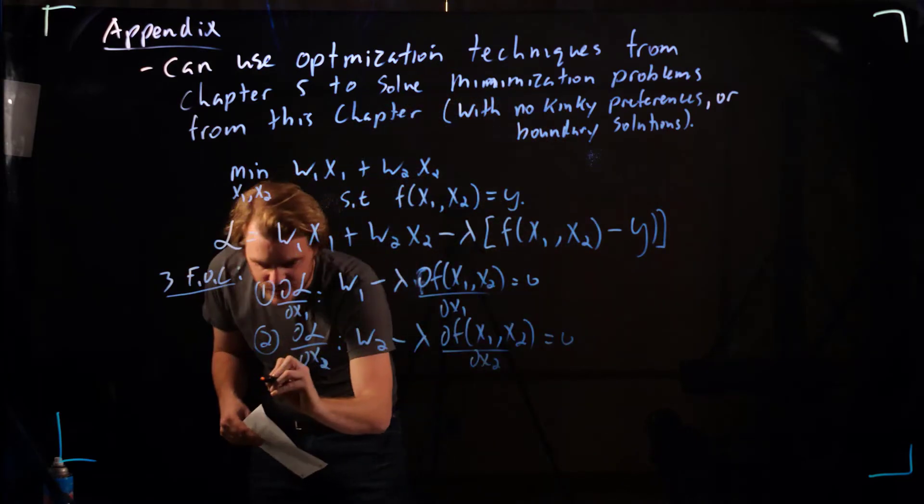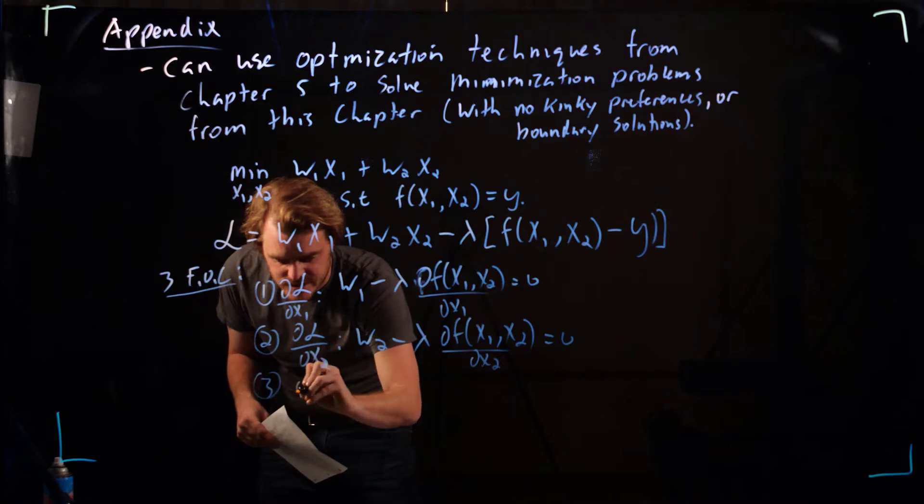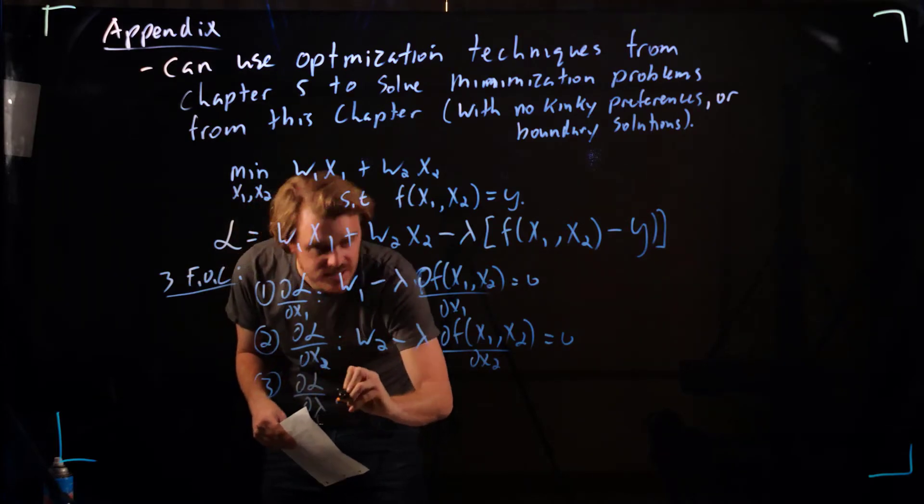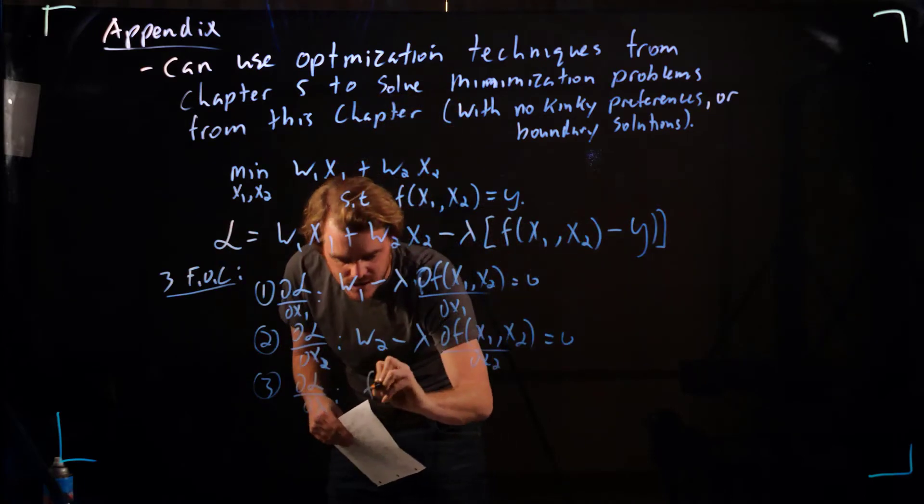And then our third one, which is just the derivative of our Lagrangian with respect to lambda, which is just our constraint here.